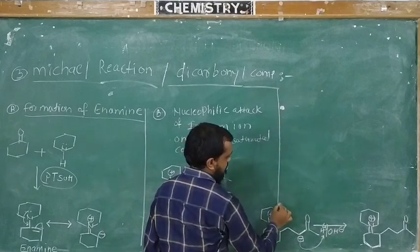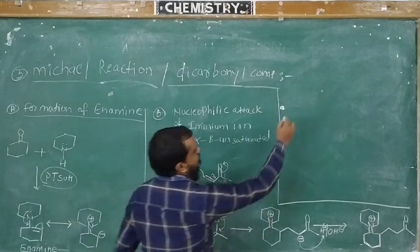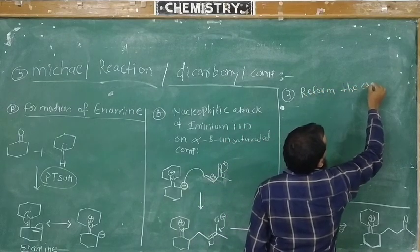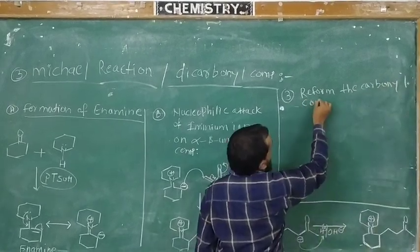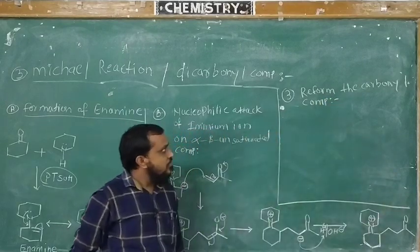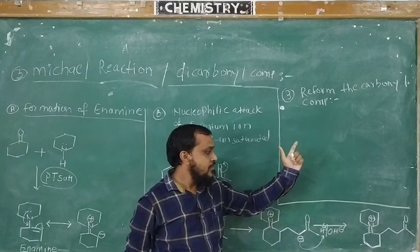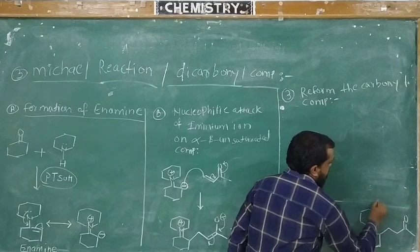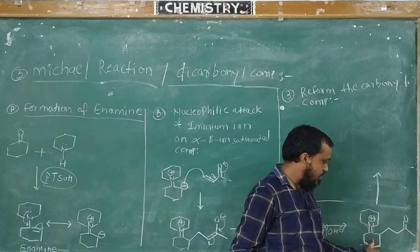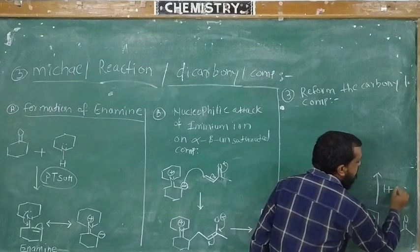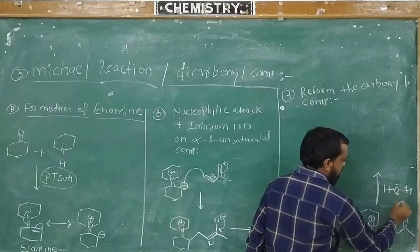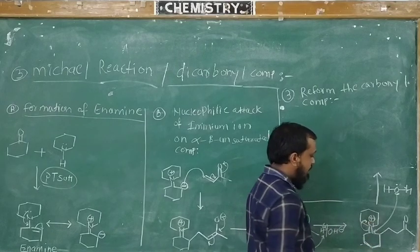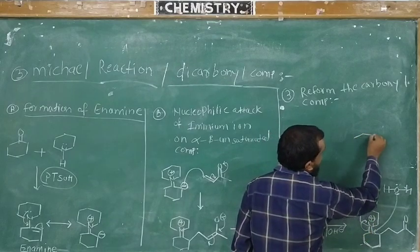Now the third step is reformation of the carbonyl compound. This is the third step of the reaction mechanism. In this step, the formed intermediate undergoes hydrolysis. This is the product of the second step, and this product undergoes hydrolysis in the third step. Here, the lone pair of water attacks on this carbon atom; simultaneously, the pi bond between nitrogen and carbon shifts towards nitrogen, and nitrogen acquires a positive charge, and we will get this type of intermediate.